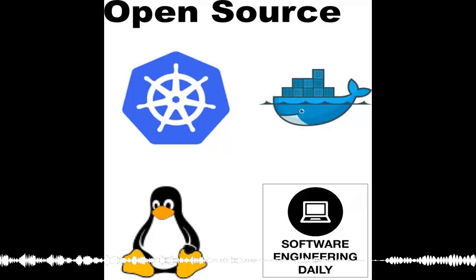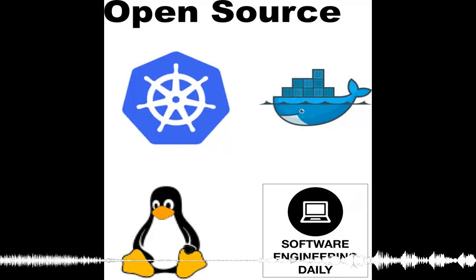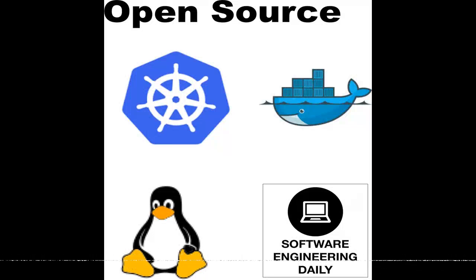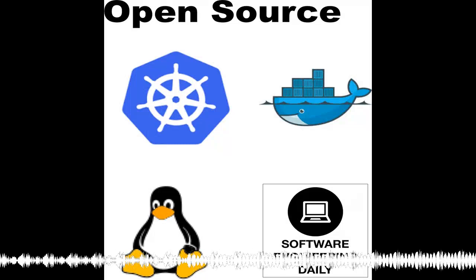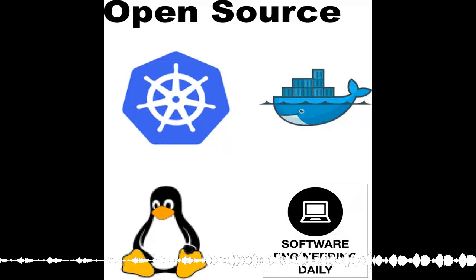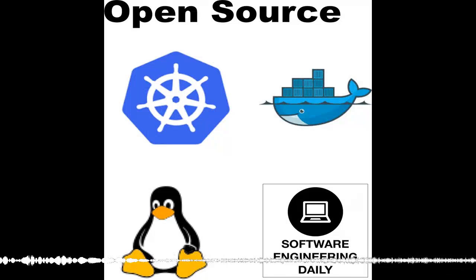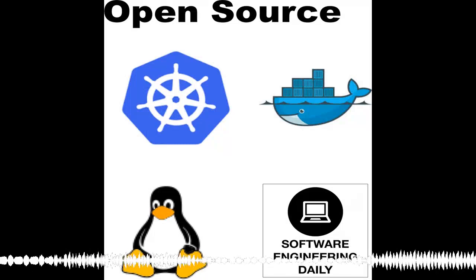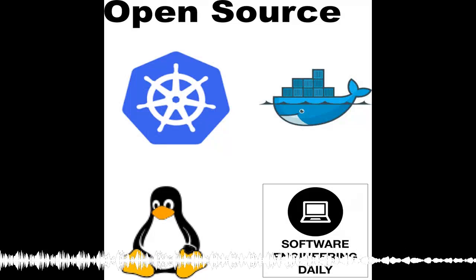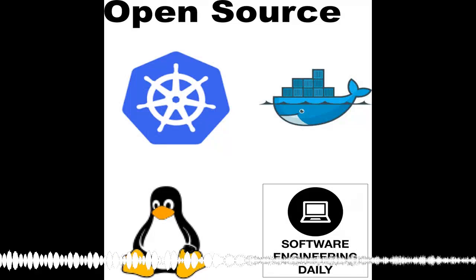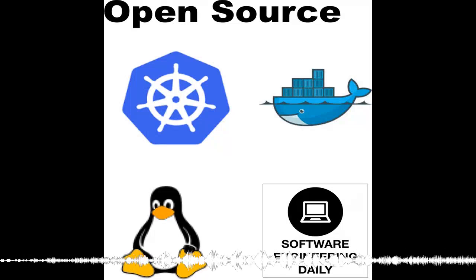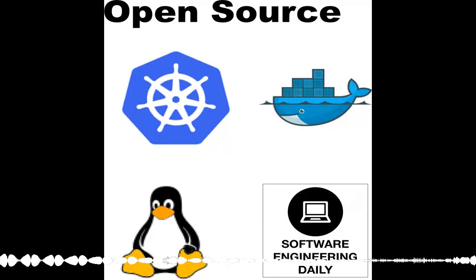Kubernetes is an orchestration system for managing containers. Since it was open-sourced by Google, Kubernetes has created a wave of innovation in the infrastructure technology space. Another recent innovation has been the serverless execution tools, such as AWS Lambda and Google Cloud Functions.